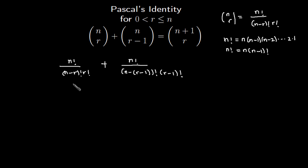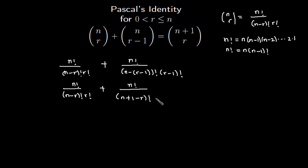So we have n factorial over n minus r factorial times r factorial, plus n factorial over — expanding this second denominator — n plus one minus r factorial times r minus one factorial. Looking at these denominators, we have n minus r factorial and r factorial in the first term, and n plus one minus r factorial times r minus one factorial in the second.